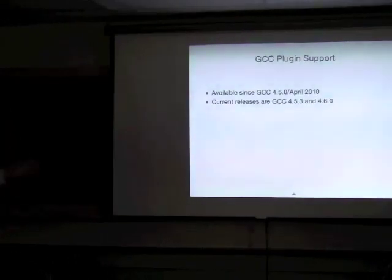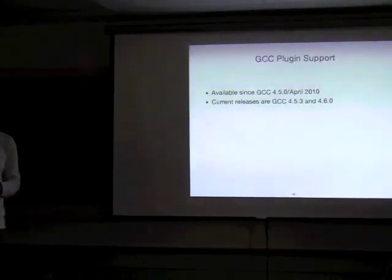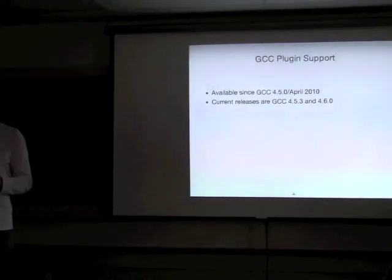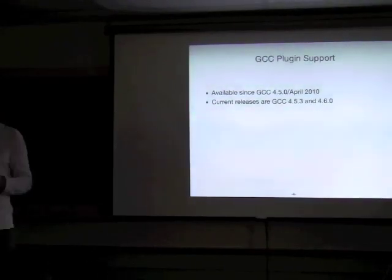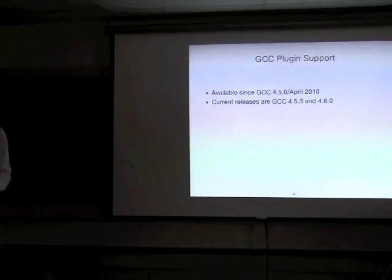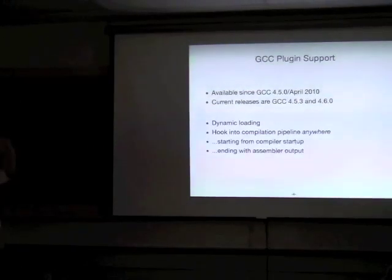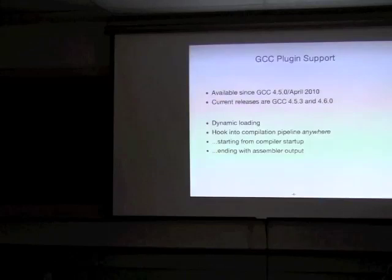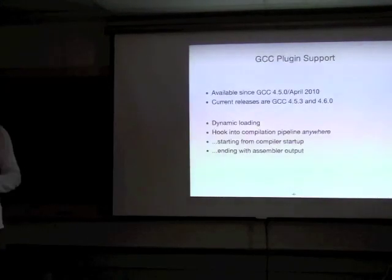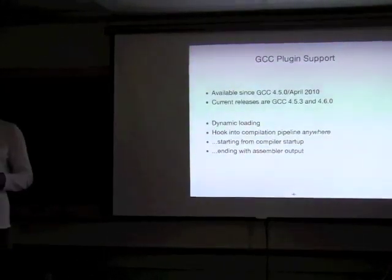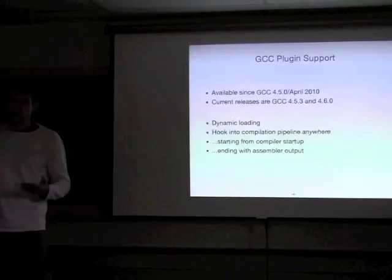Let me just give one slide introduction to the GCC plugins that I mentioned in the previous slide. For those of you who haven't attended my previous talk, in version 4.5, which was released in April 2010, GCC added support for compiler plugins. The plugin architecture allows us to use dynamic loading and it allows us to hook into the compilation pipeline pretty much anywhere starting from the compiler startup and ending with assembler output. One interesting application of plugins is to reuse the matured C++ parser which is part of GCC. This is essentially what ODB does.